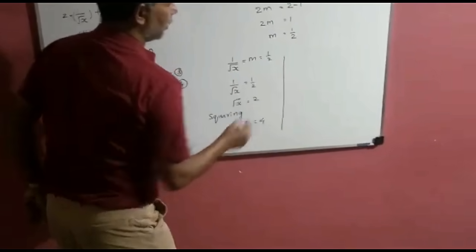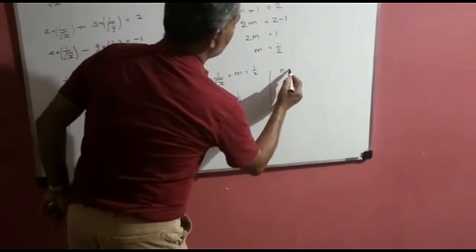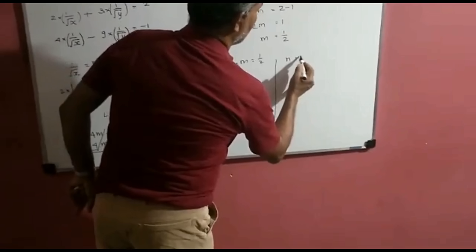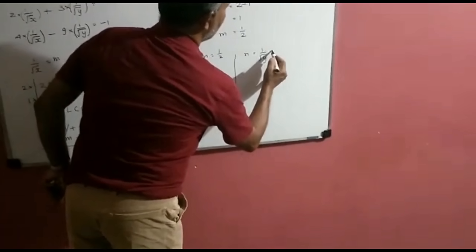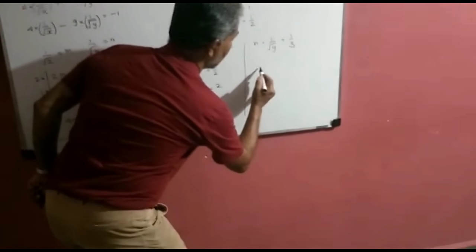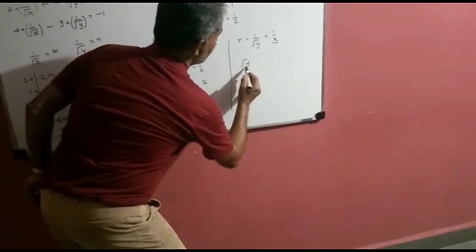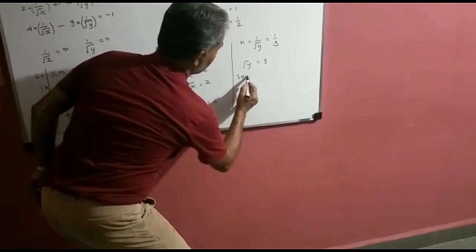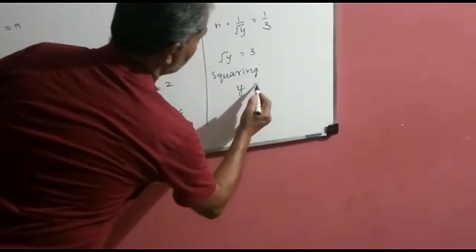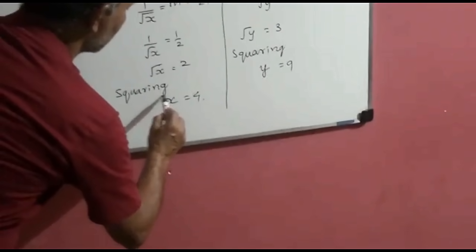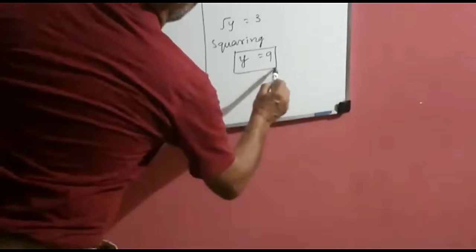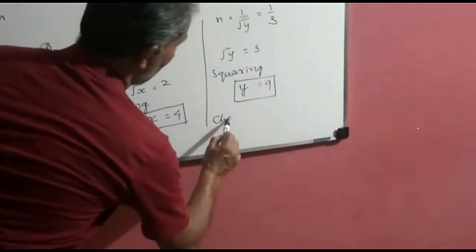Similarly, n is equal to 1 upon root y equals 1 upon 3. Cross multiplying gives root y equals 3, so squaring, y is equal to 9. Thus we get x is equal to 4 and y is equal to 9.